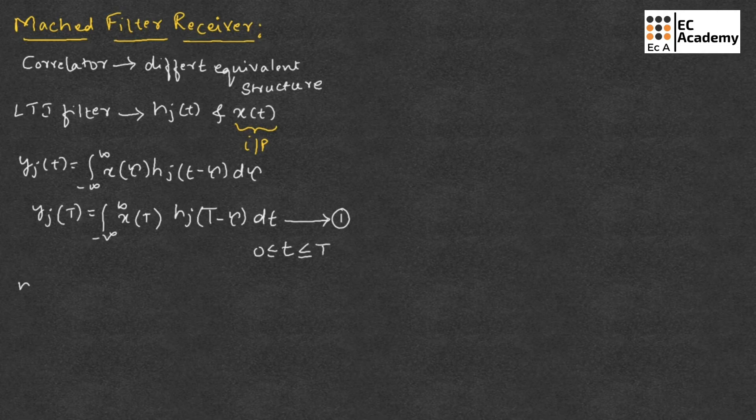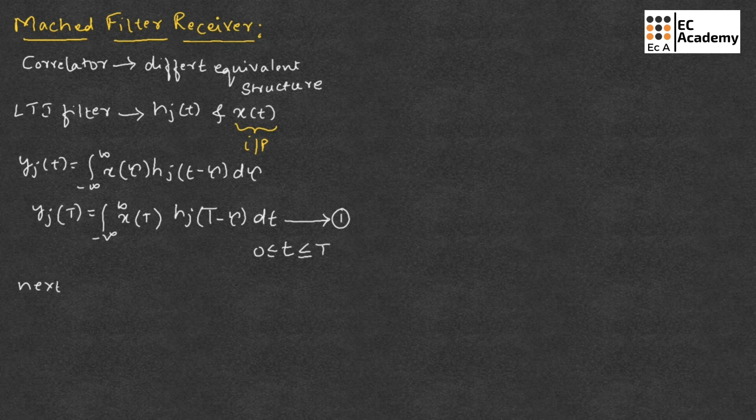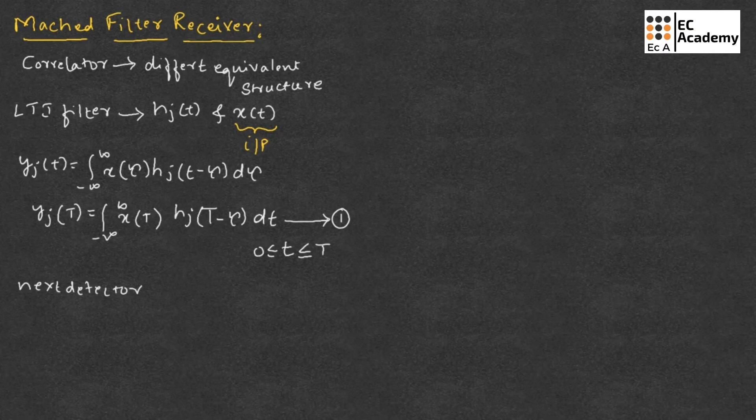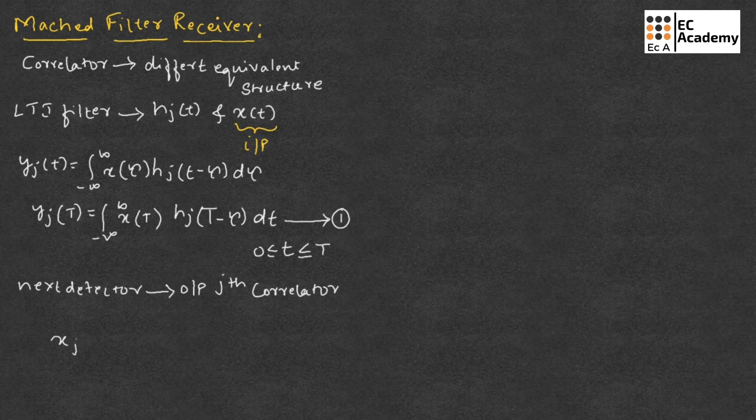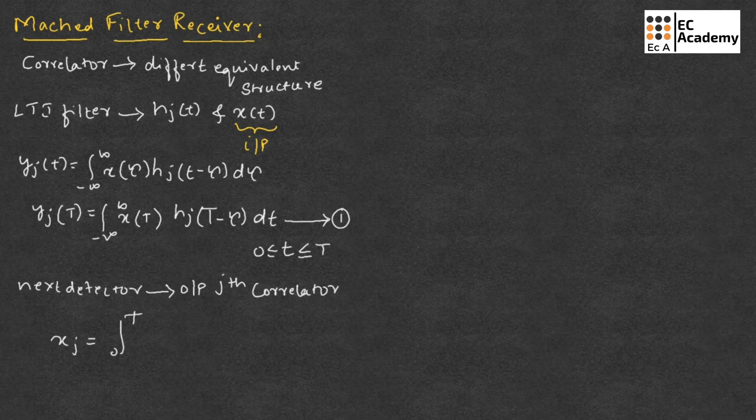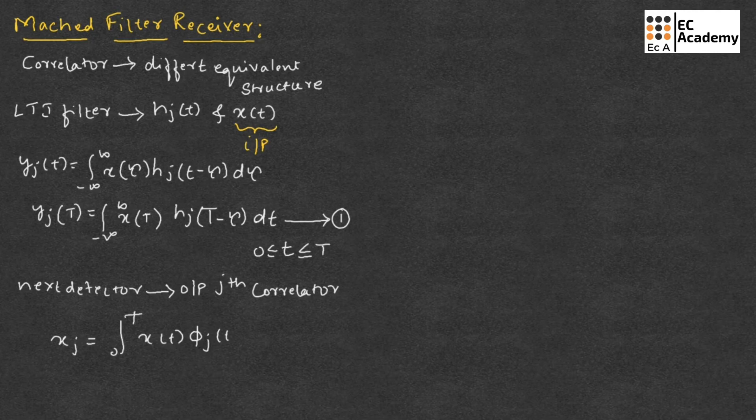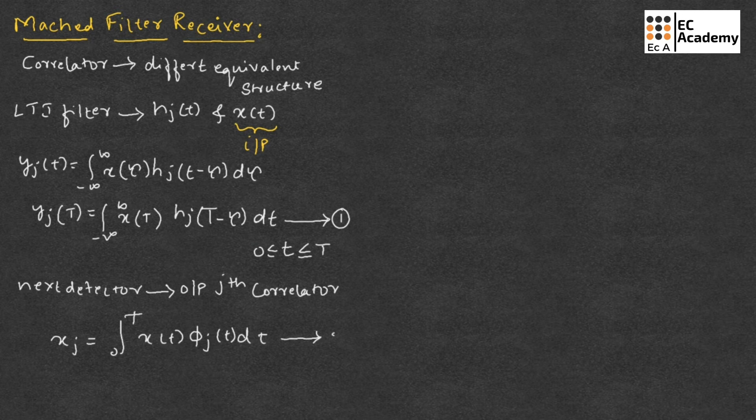If we consider next detector on the banks of correlators, the output of jth correlator can be defined as xj is equal to integration of 0 to t, x of t phi j of t dt. Let us call this as equation number 2.